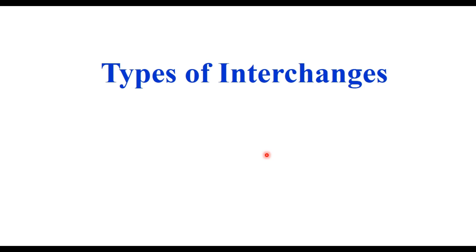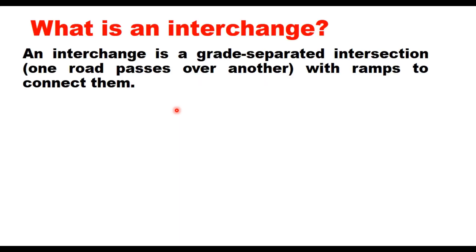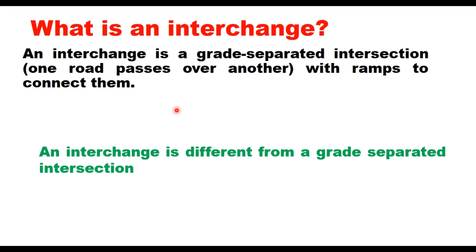Today we will discuss types of interchanges. A grade-separated intersection or a road interchange is fundamentally a crossing of two or more roadways at different levels. Two key terms are important: interchange and grade separation. An interchange is a grade-separated intersection with ramps to connect them, and it is different from a plain grade-separated intersection.